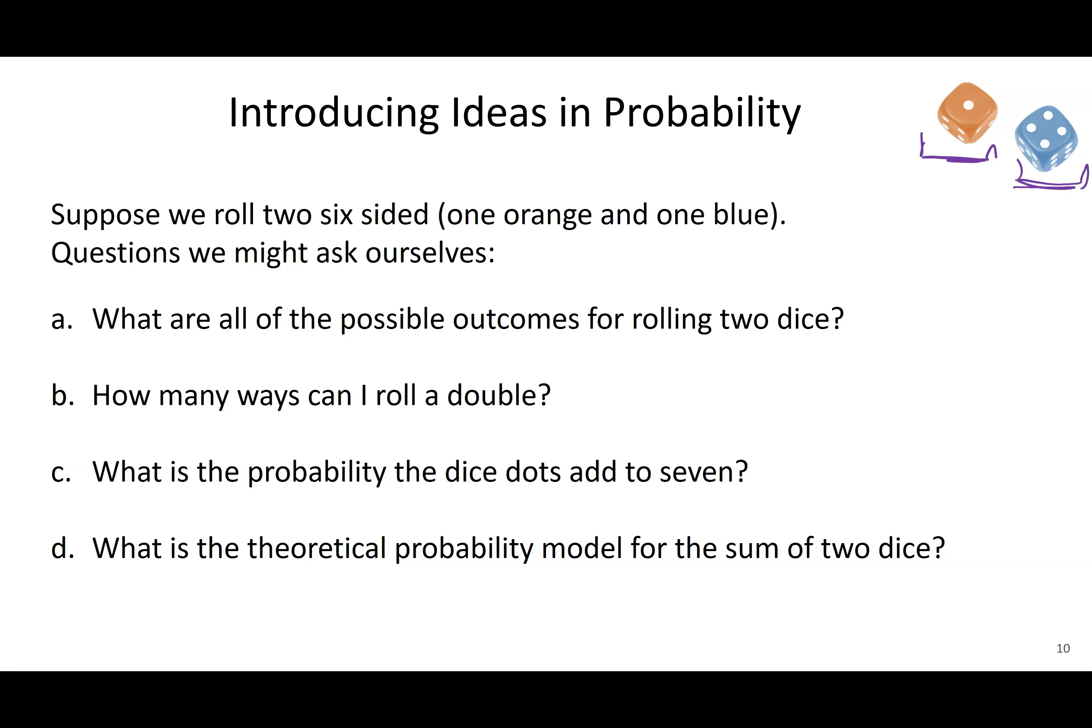There are all sorts of questions you can ask after rolling these two dice. What are all the possible outcomes? How many ways can I roll a double? What is the probability that the dots add to seven? Here they add to five. So what is the theoretical probability model for the sum of two dice? These are just a few of the many questions we could be asking.